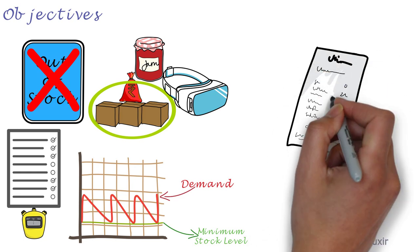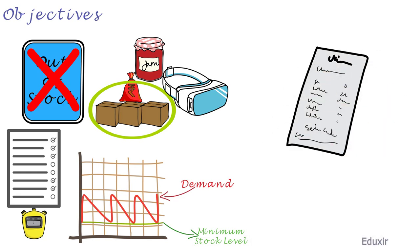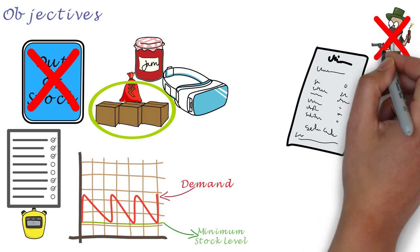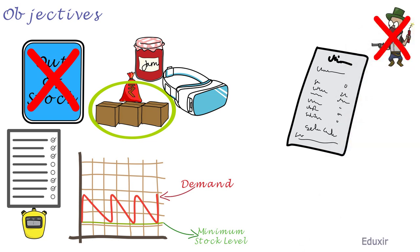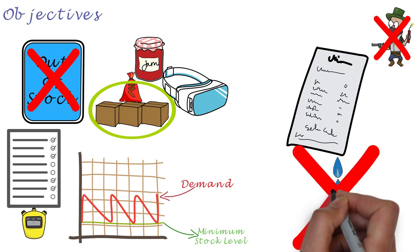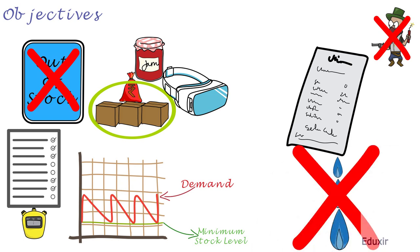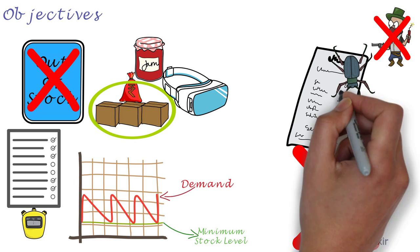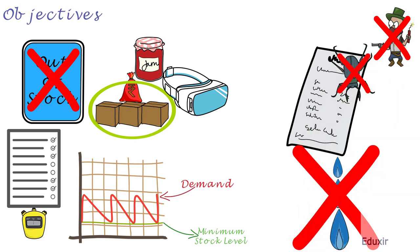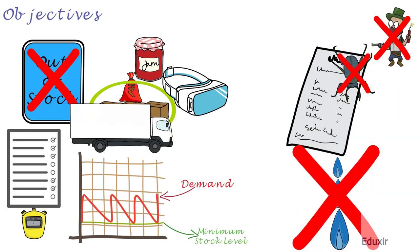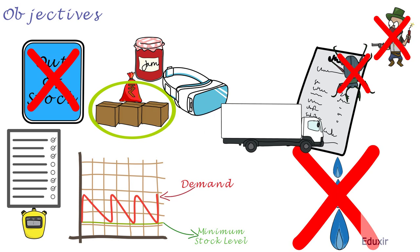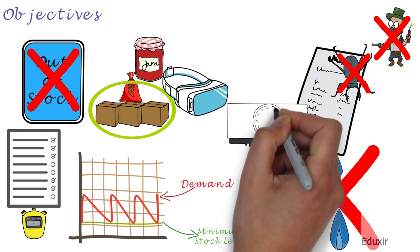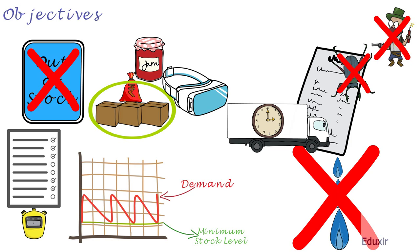Maintain proper records of the inventory so as to safeguard against stealing, loss due to leakage, or loss due to pests, and also to ensure that the stock is ordered to replenish it at the right time. That covers the definition and objectives of inventory control. Thanks for watching.